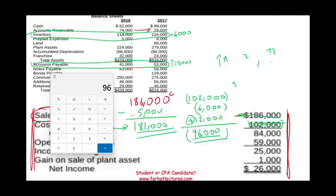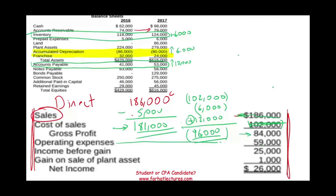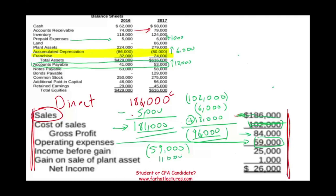Gross profit is a computational figure. Operating expenses is 59,000. I need to analyze my operating expenses of 59,000. To do so, I have to know which accounts are part of operating expenses. Most likely prepaid expense is related to my operating expense. Starting with 59,000 — my prepaid went up. If my prepaid went up, remember 59 is an expense, a negative cash outflow. If I purchased an additional 1,000 of prepaid, it means I have to consider it as a cash outflow. I also notice that accumulated depreciation and franchise accounts changed.